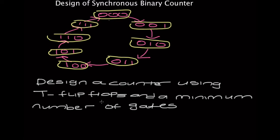So before we even do anything, we need to look at this diagram. We see that there's always a present state and a next state. So let's say 0, 0, 0 was the present state — your next state will be 0, 0, 1. And if 0, 0, 1 was your present state, your next state is going to be 0, 1, 0.